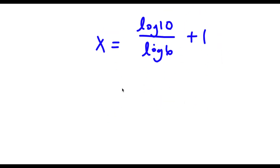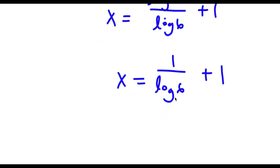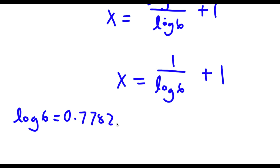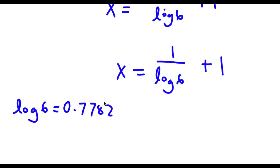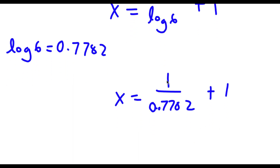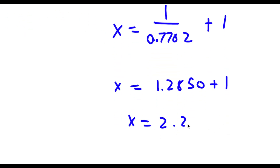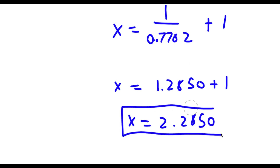Now log 10 is the same thing as 1, so now I have x is equal to 1 over log 6 plus 1. Log 6 is equal to 0.7782, so replacing that I get x equals 1 over 0.7782 plus 1. Now 1 over 0.7782 is 1.2850, plus 1 gives 2.2850. So this is my answer.